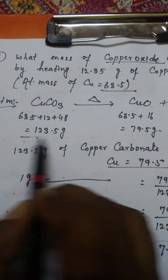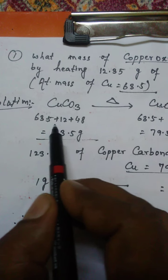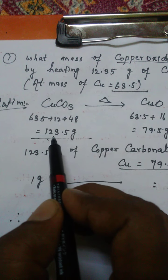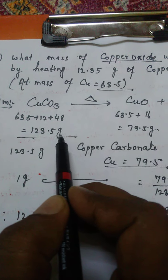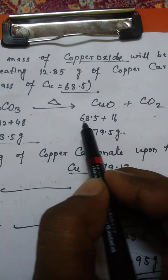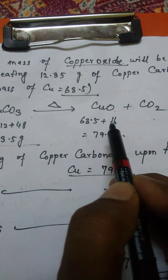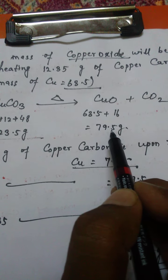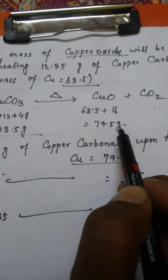We calculate the molecular mass of copper carbonate: 63.5 plus 12 plus 48 equals 123.5 grams. For copper oxide, 63.5 plus 16 gives 79.5 grams.